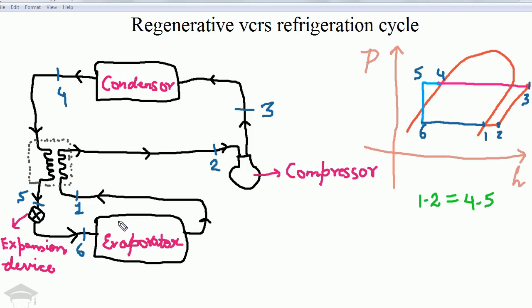is evaporated in the evaporator. From 1 to 2, it takes heat from the regenerator. From 2 to 3, the refrigerant is compressed and the pressure and temperature rise. From 3 to 4